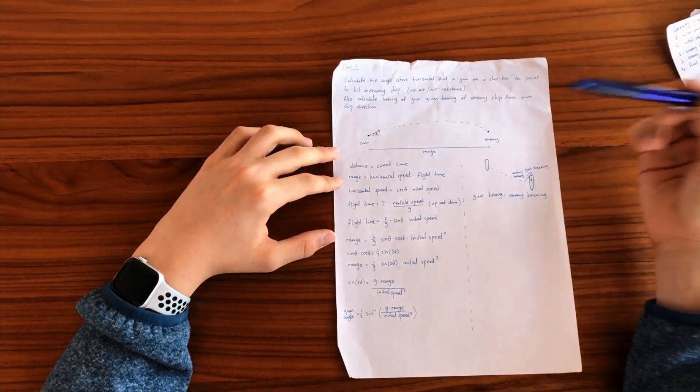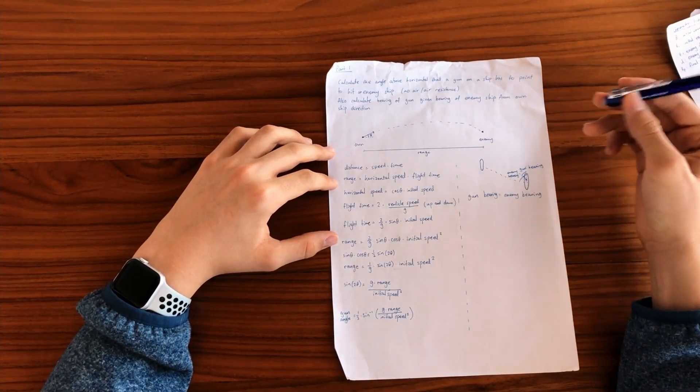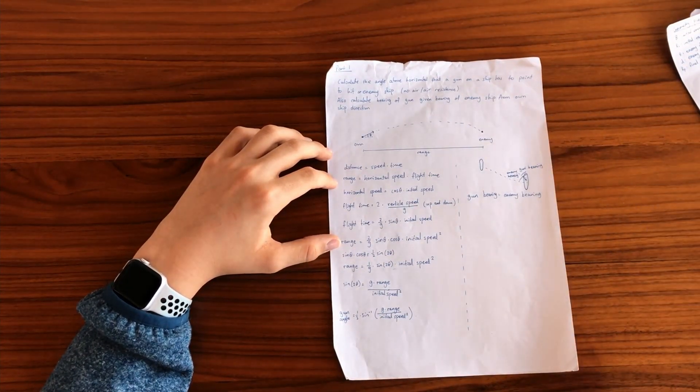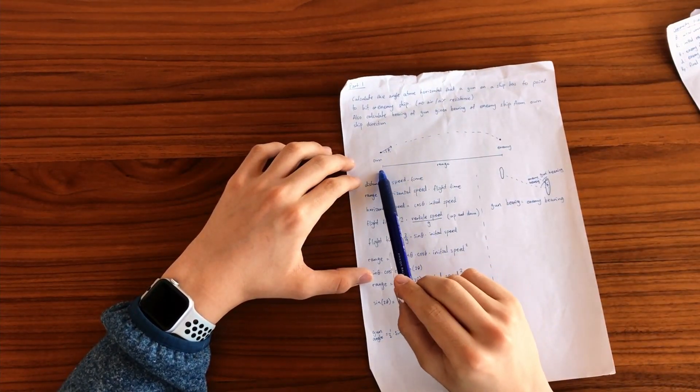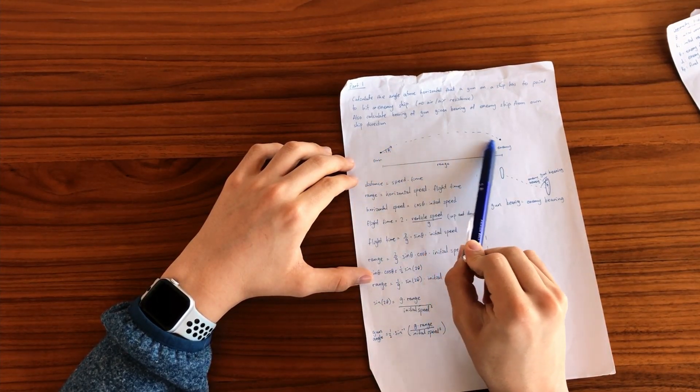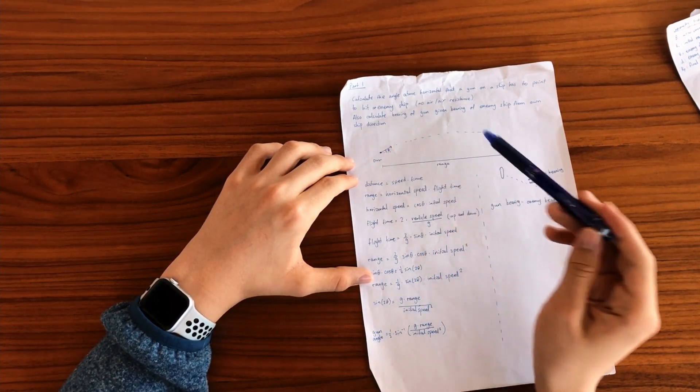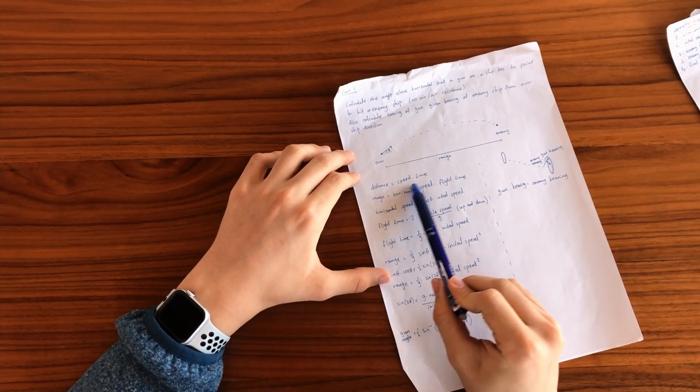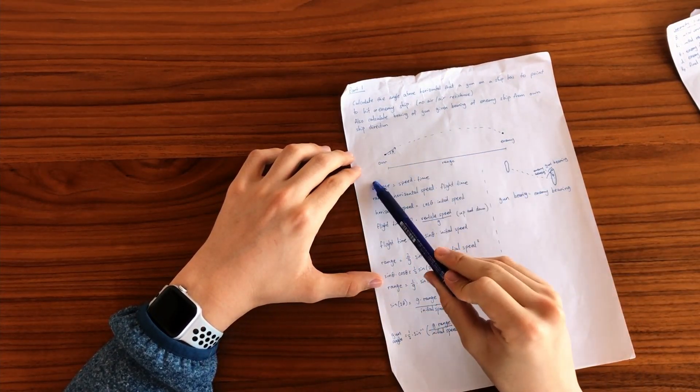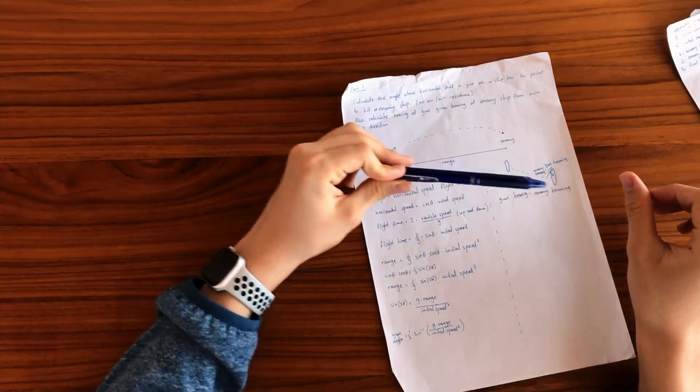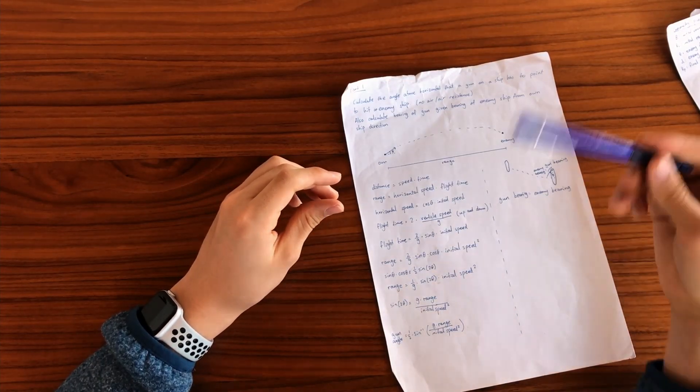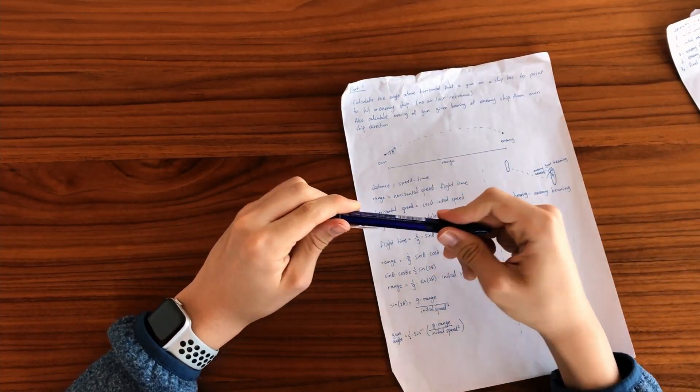So first, in the first part, where you calculate the angle above the horizon, the elevation of a gun, given the range that you have to hit. Here's a rough diagram of how it works, here's the range, here's yourself that's shooting the projectile, and here's the enemy, and it follows a parabolic path, this is looking from the side. So first, distance equals speed times time, right? But what distance equals what speed times what time? The range is the horizontal speed times the flight time, and since horizontal speed can be thought of as independent from vertical speed since there's no air resistance, that's what you can do.